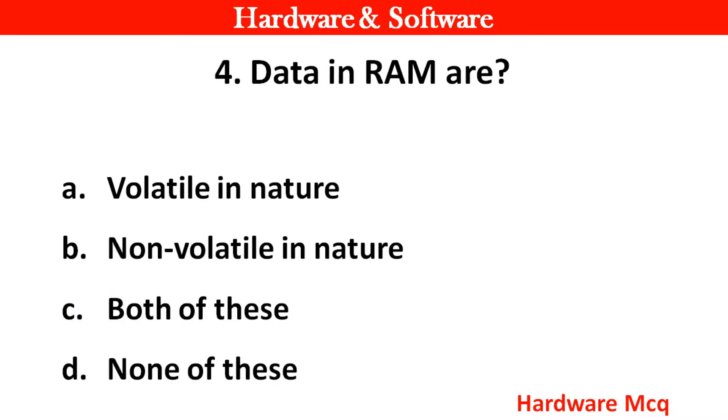Question 4: Data in RAM are? Right answer is option A — Volatile in nature.